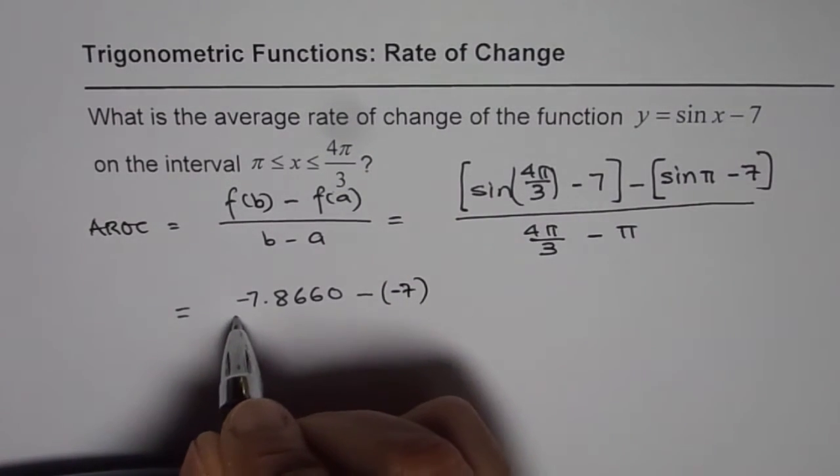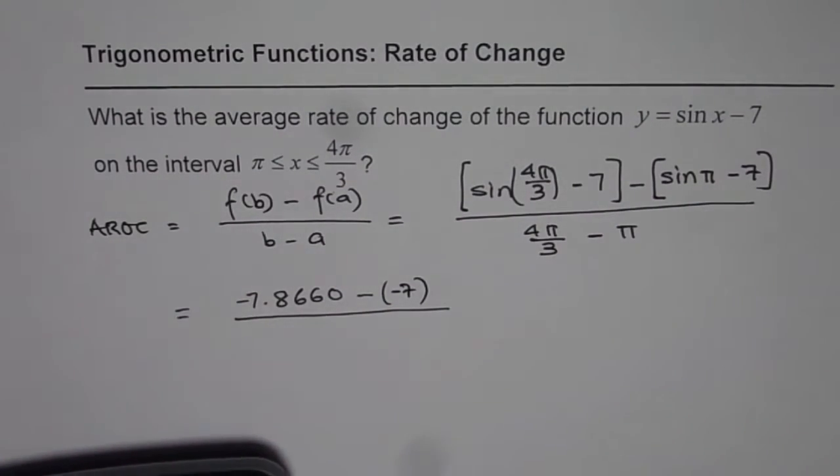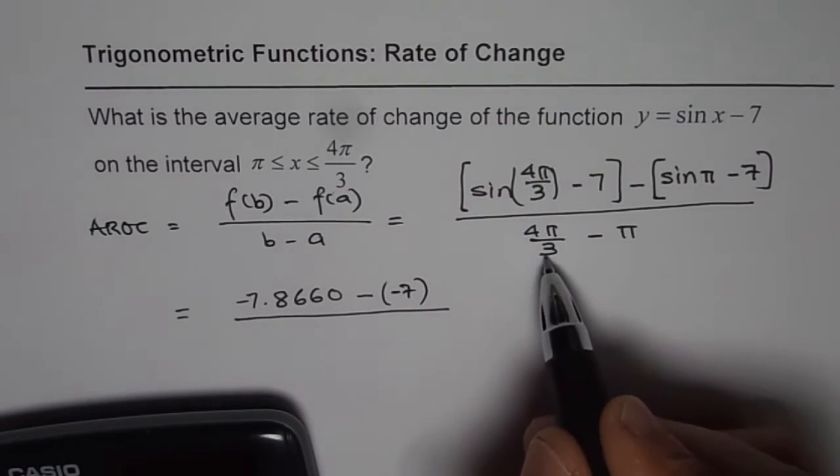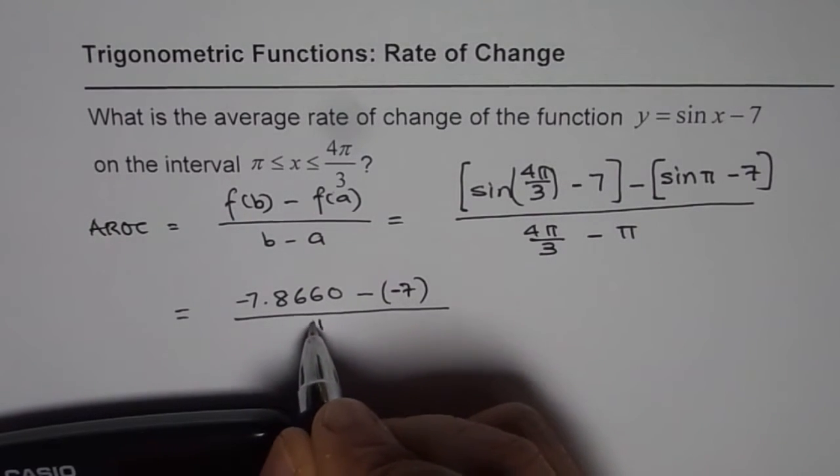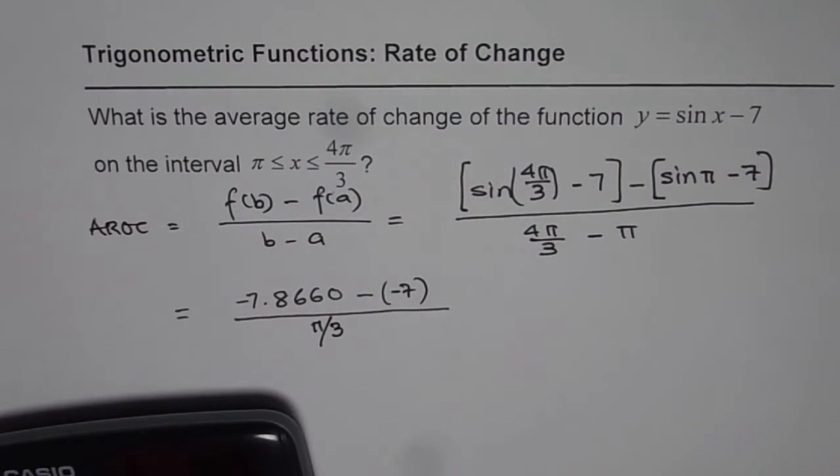So 7 divided by 4 pi by 3 minus pi, you could take common denominator. 4 pi minus 3 pi is pi, so you get pi over 3. Now we can add 7 to it, so plus 7 in the numerator.